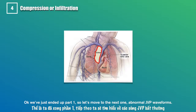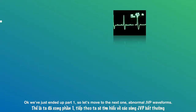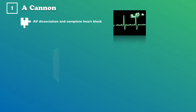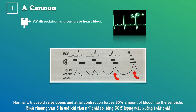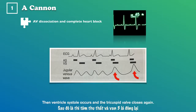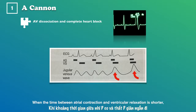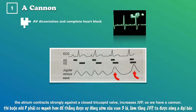Now let's move to part 2: abnormal JVP waveforms. The cannon A wave is more common in atrioventricular dissociation and complete heart block. Normally, the tricuspid valve opens and atrial contraction forces blood into the right ventricle, then ventricular systole occurs and the tricuspid valve closes. When the interval between atrial contraction and ventricular relaxation is shorter, the atrium contracts strongly against a closed tricuspid valve, increasing JVP — producing a cannon A wave.